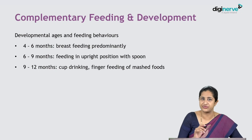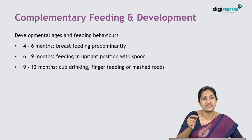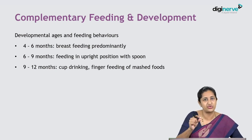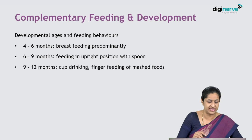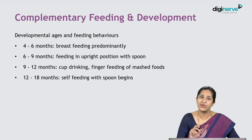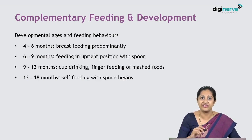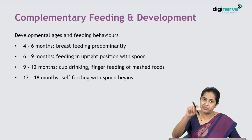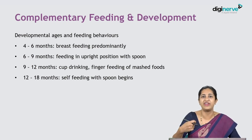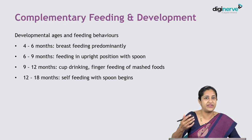At 9 to 12 months, cup feeding can be initiated where the mother holds the cup and the baby also holds the cup and gently tries to drink. Finger feeding of mashed foods begins — the baby can take finger-sized bites using the developing pincer grasp, taking small pieces of food and eating by himself or herself. By 12 to 18 months, baby starts self-feeding with a spoon, though there is spillage and smearing around the mouth.